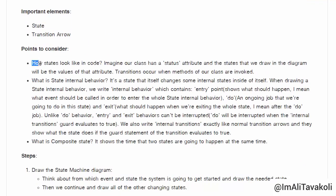state and transition arrow points to consider. So, now, you may ask that how states look like in code. Well, imagine our class has a status attribute and the states that we draw in the diagram will be the values of that attribute. Transitions occur when methods of our class are invoked. So that's how we code states in a programming language. Now,